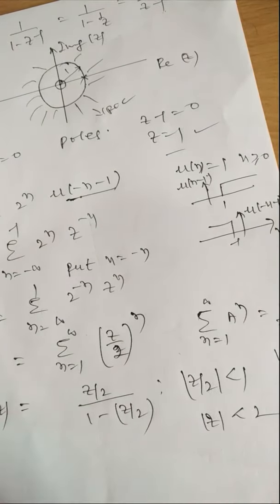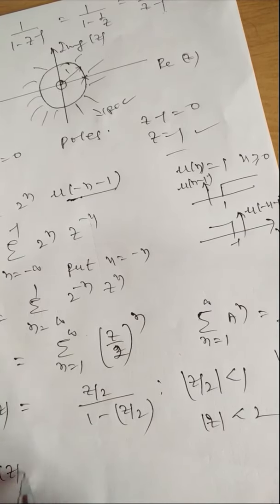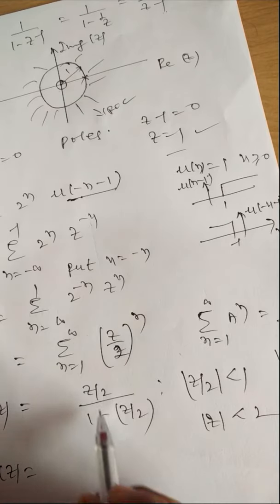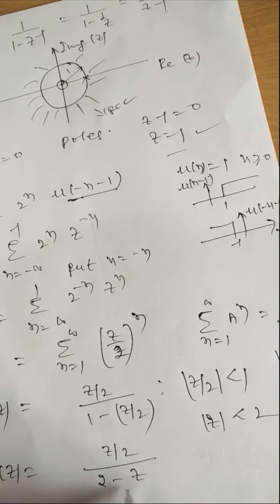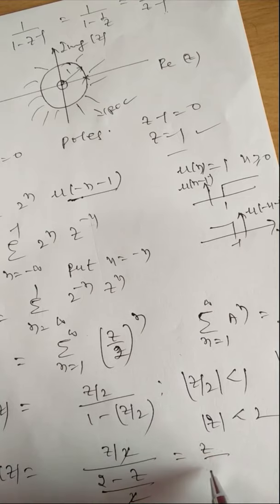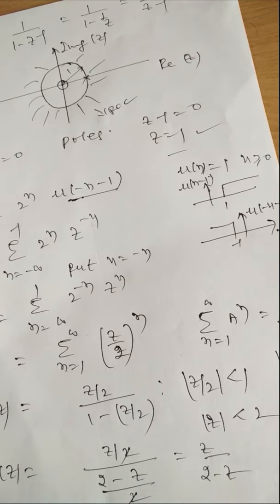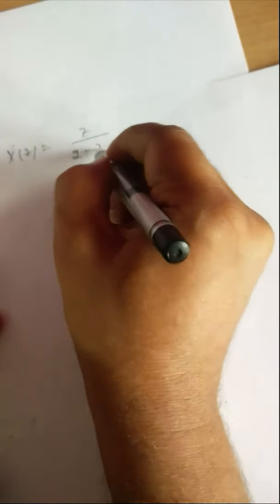This is X(z). Now finding poles and zeros: X(z) = (Z/2) / (1 - Z/2). Taking 2 as LCM in the denominator gives (Z/2) / ((2-Z)/2). The 2s cancel, giving X(z) = Z / (2 - Z).